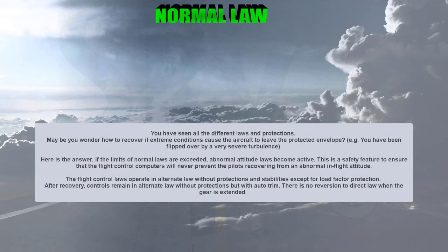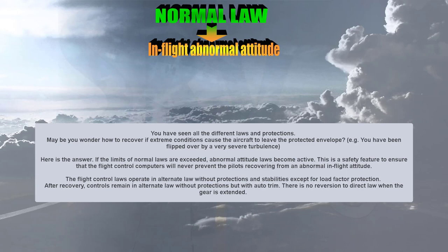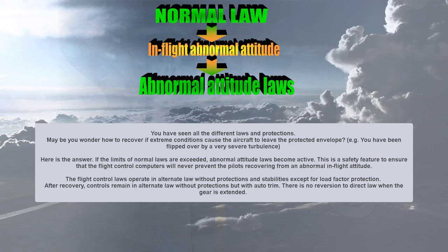You may wonder how to recover if extreme conditions cause the aircraft to leave the protected envelope — for example, if you have been flipped over by very severe turbulence. If the limits of normal law are exceeded, abnormal attitude laws become active. This is a safety feature to ensure the flight control computers will never prevent pilots from recovering from an abnormal in-flight attitude. The flight control laws operate in alternate law without protections and stability, except for load factor protection. After recovery, controls remain in alternate law without protections but with auto-trim, and there is no reversion to direct law when the gear is extended.